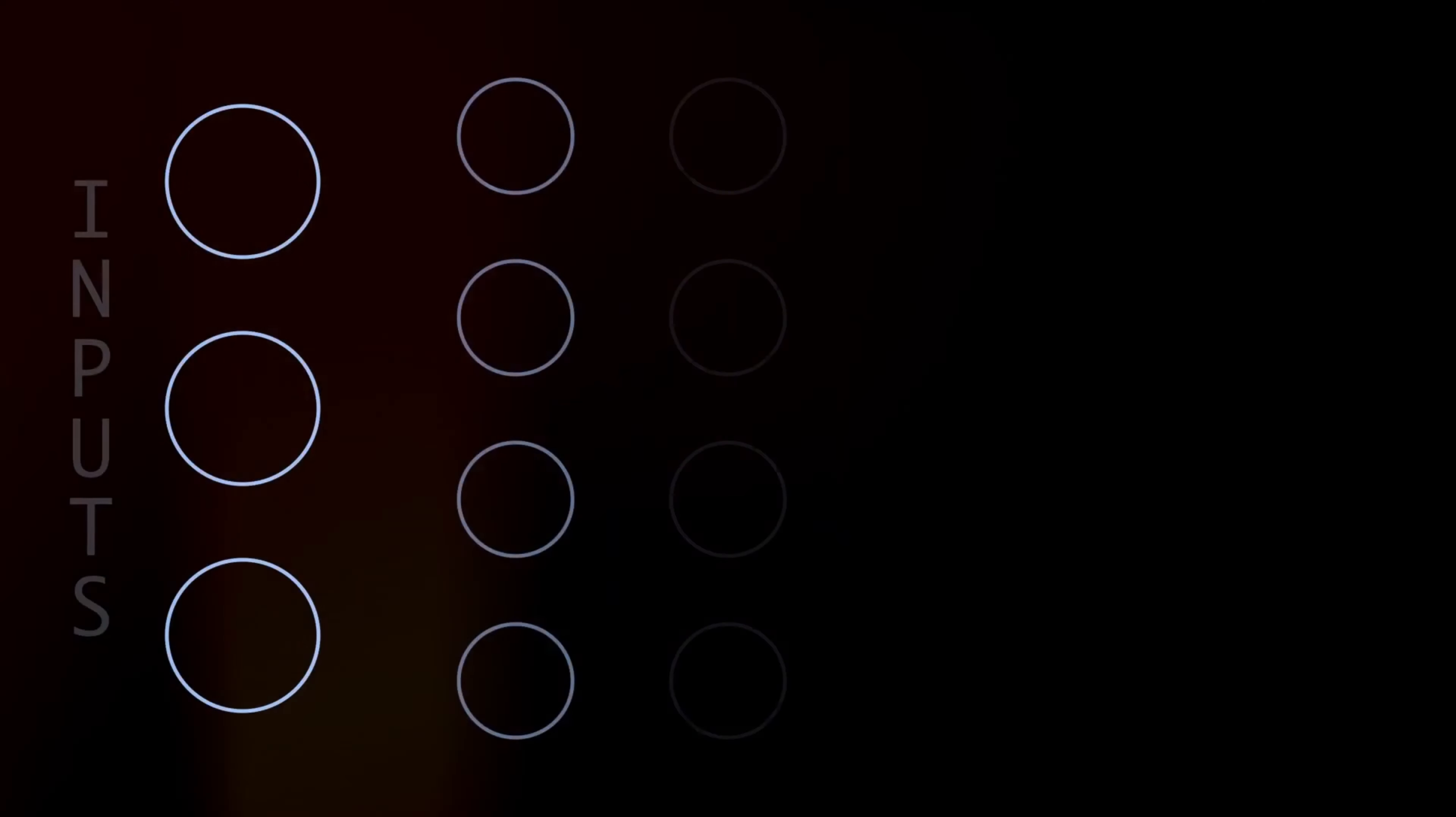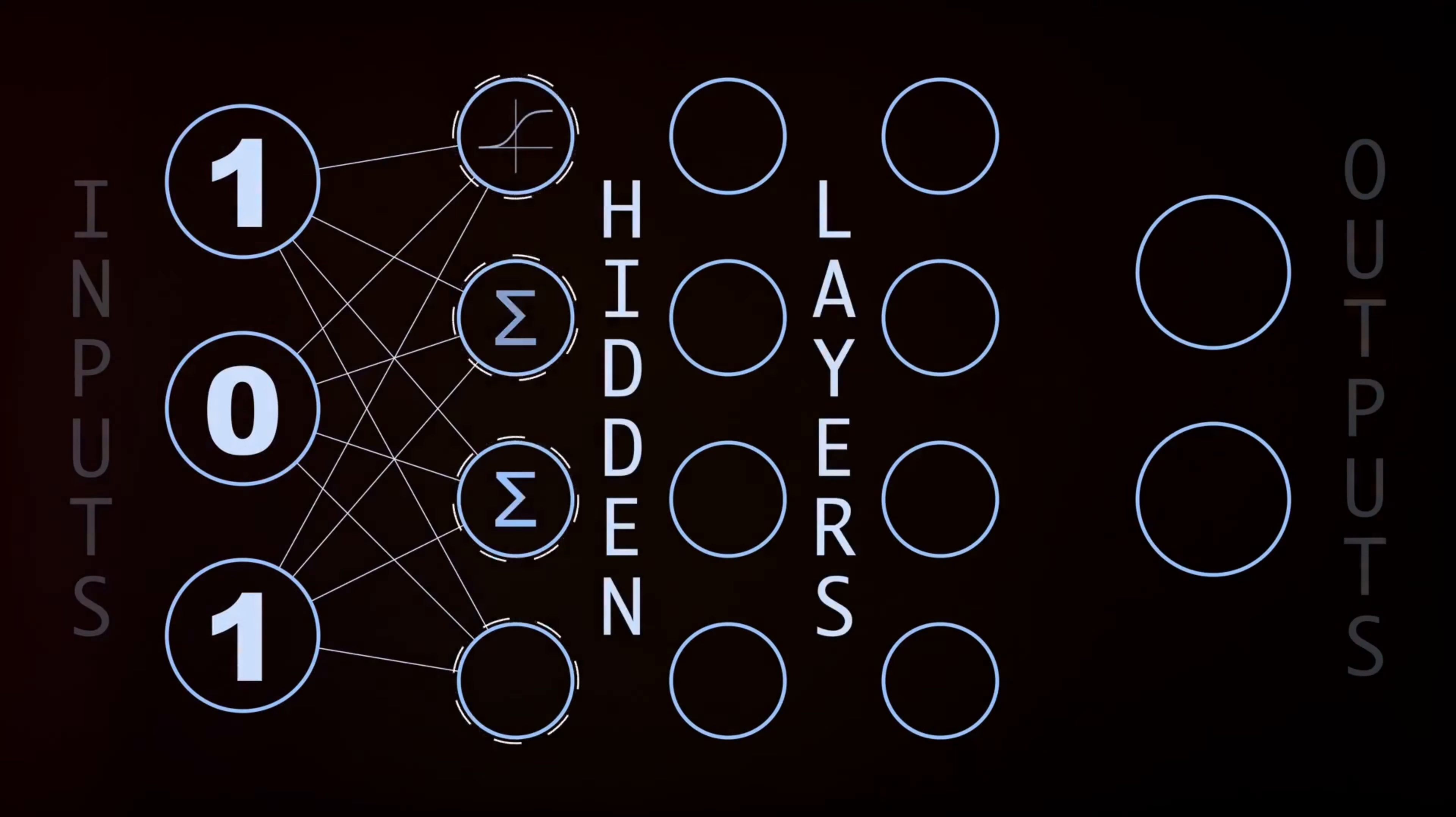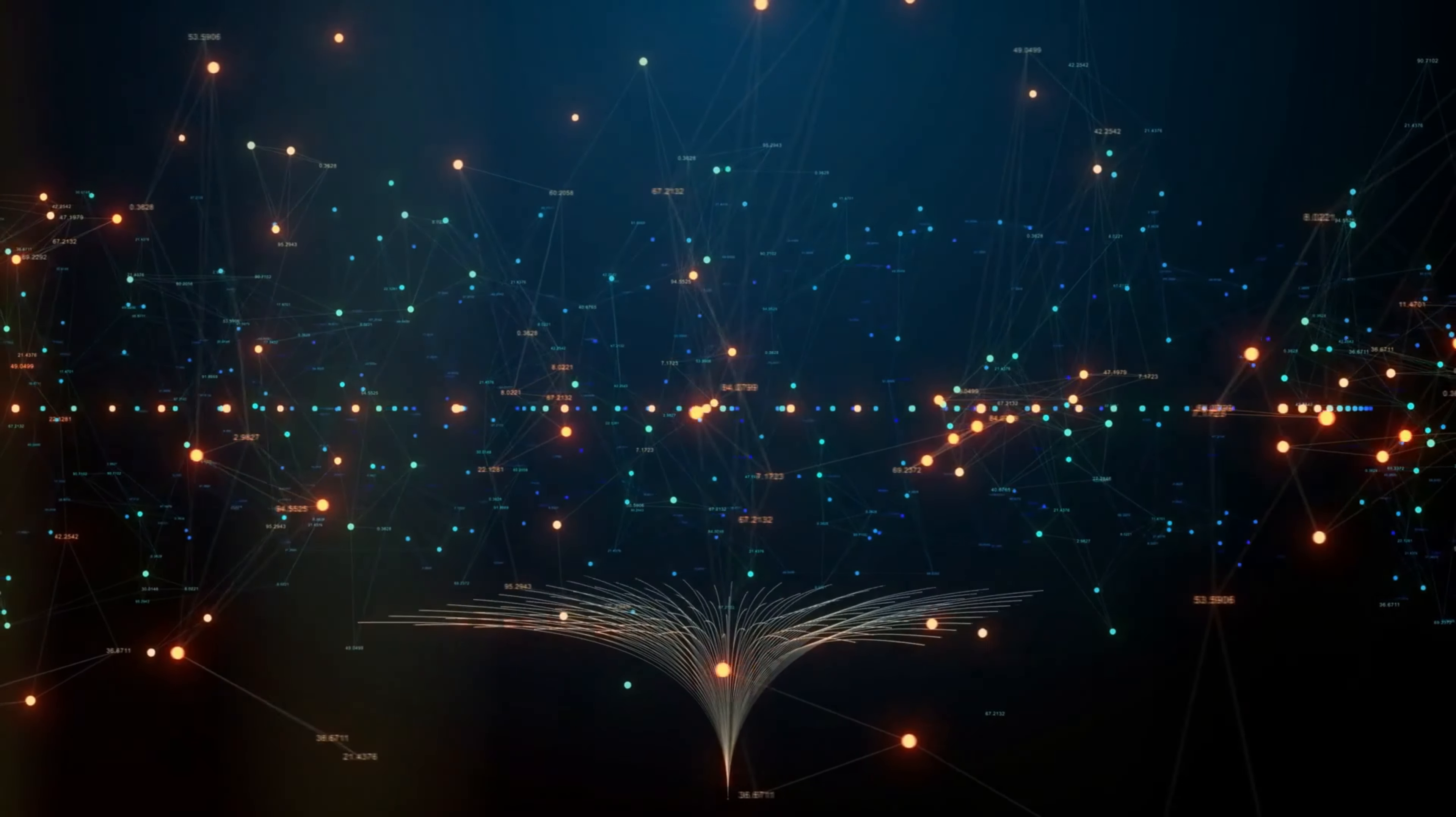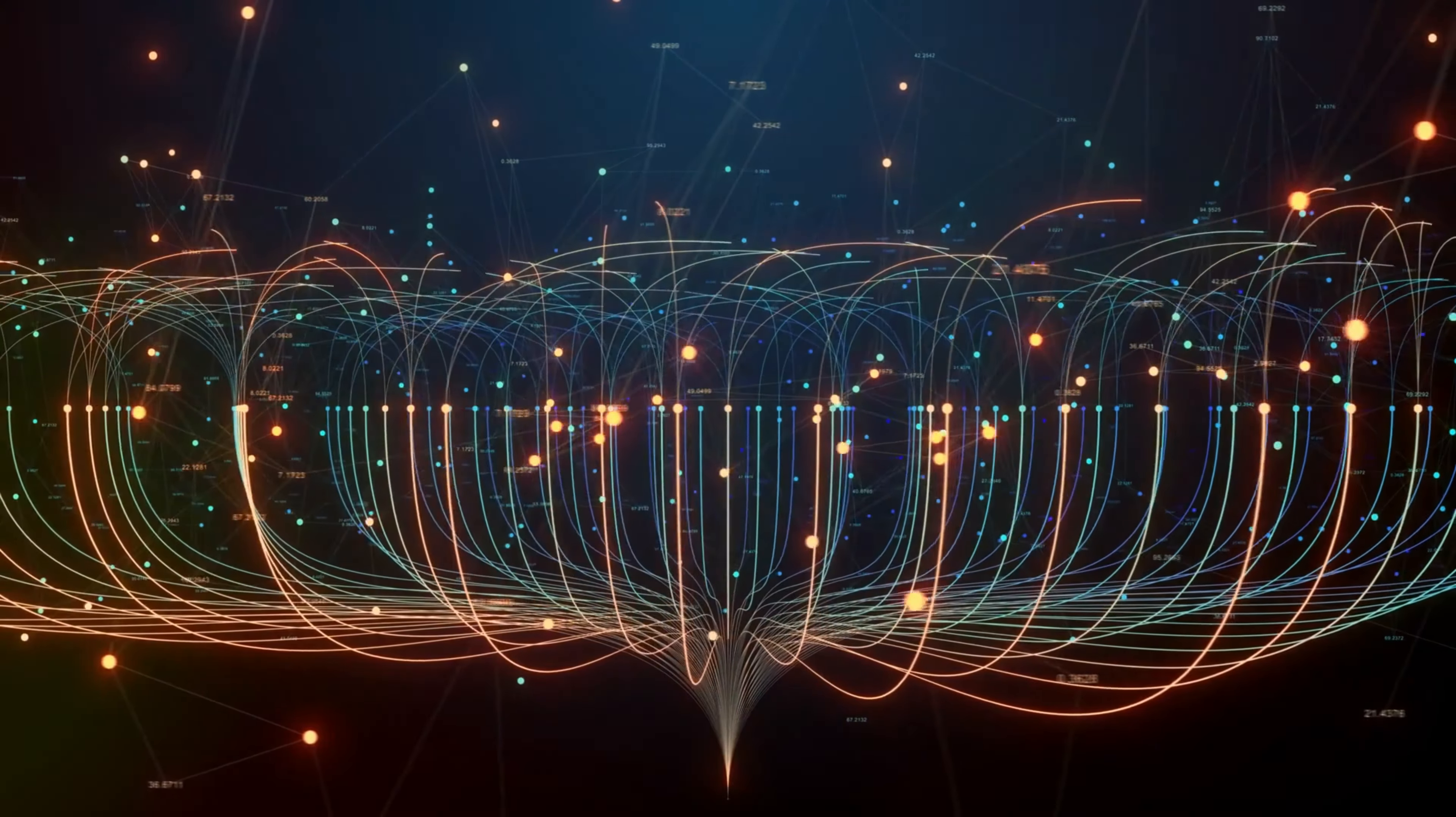At the heart of deep learning are artificial neural networks. Inspired by the human brain, these networks consist of interconnected layers of nodes or neurons. Each layer transforms its input data in the hopes of getting closer to an accurate prediction or decision. It's a bit like a game of telephone, where the messages pass from one layer to the next.